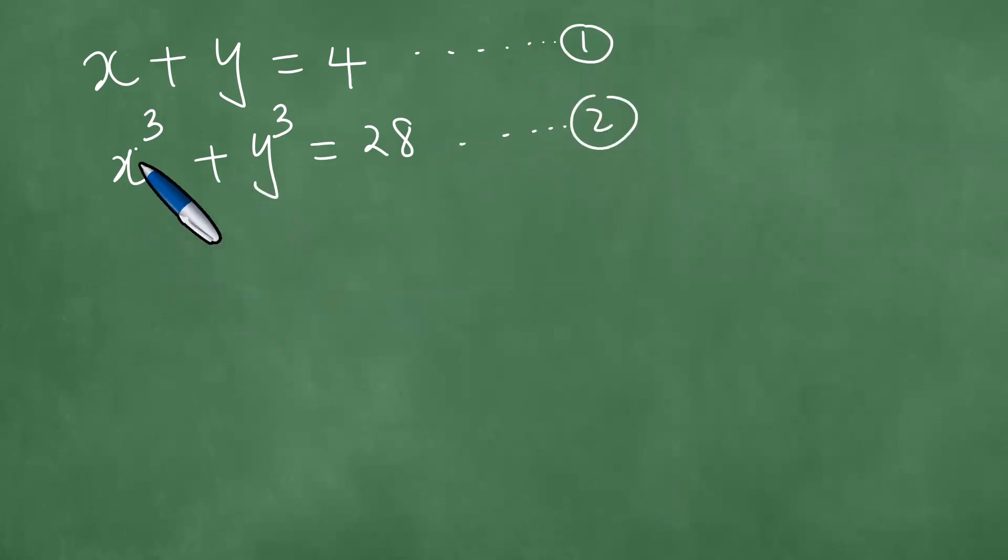Obviously the sum of their cubes, so to deal with the sum of their cubes, you can have x plus y times x squared minus xy plus y squared, and this equals 28. Call this equation 3.